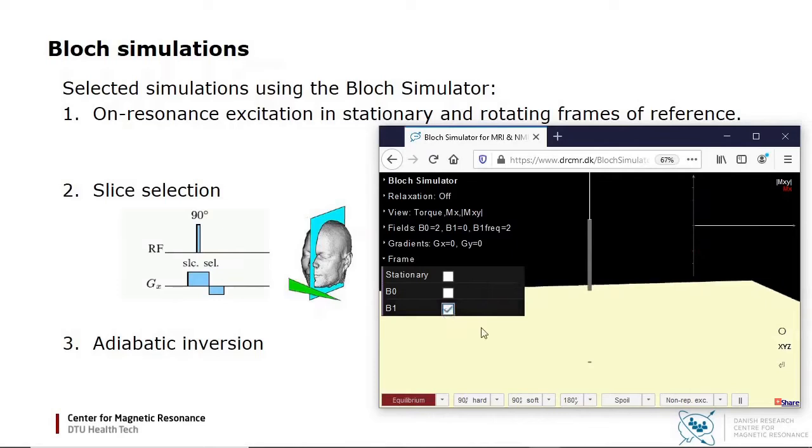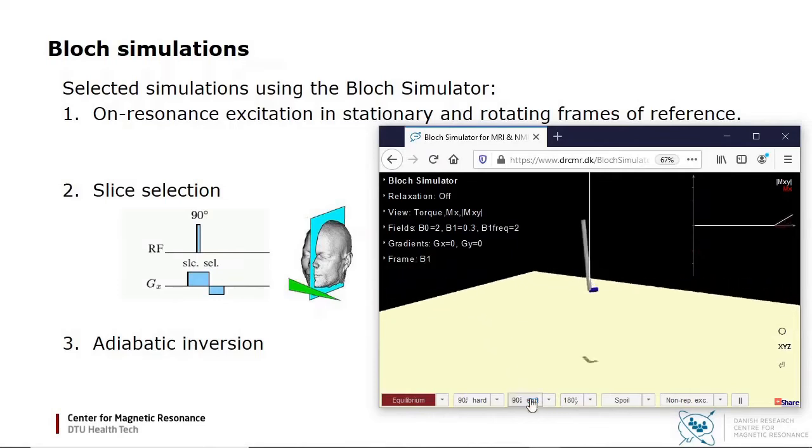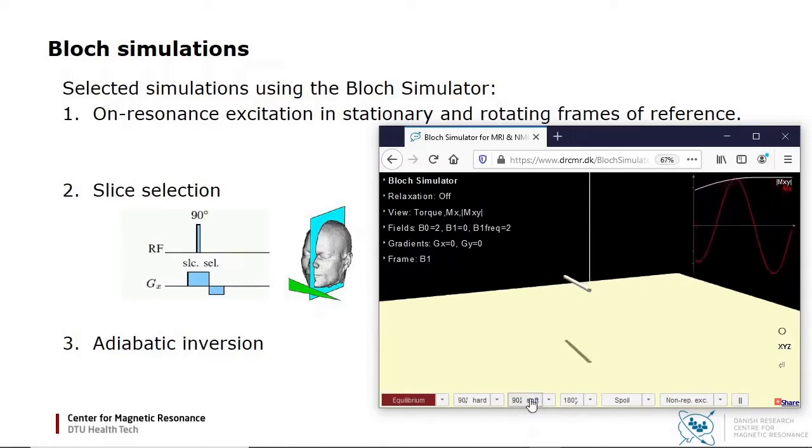Then I apply the 90 degree pulse, and you will see the effective field vector as a blue bar. You see that the magnetization precesses around the effective field vector, which is transversal, since the pulse is applied on resonance.